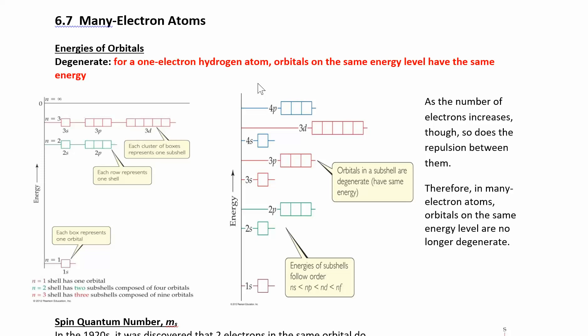We just talked about orbitals and how to describe the energy, the shape, the orientation, and the space. This is another representation of the energy levels of the orbitals. If n equals 1, that's energy level 1. When n equals 1, L equals 0, so you're going to have an s orbital — that's the only possibility.